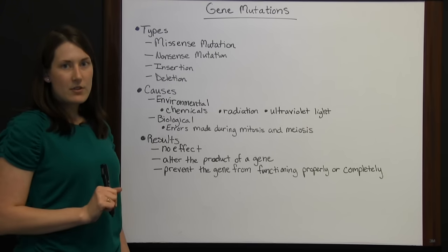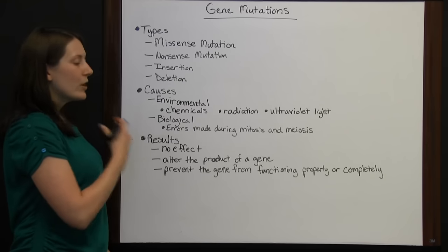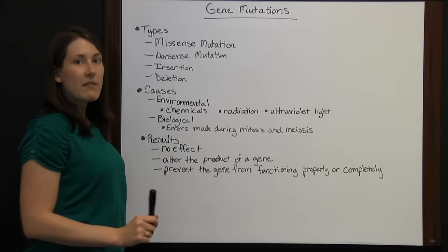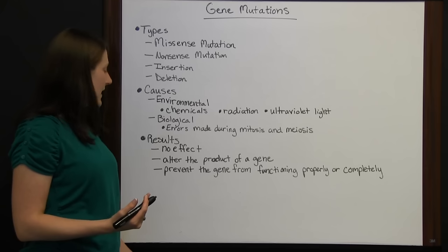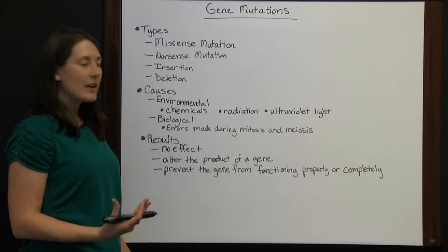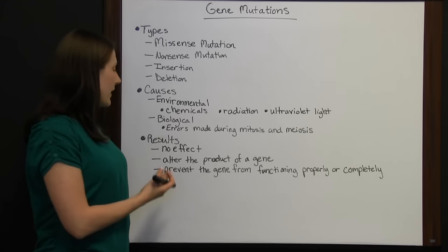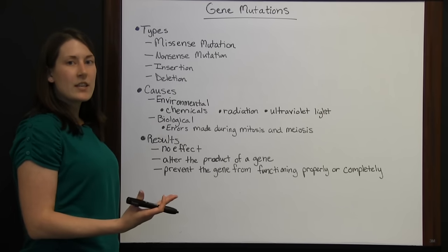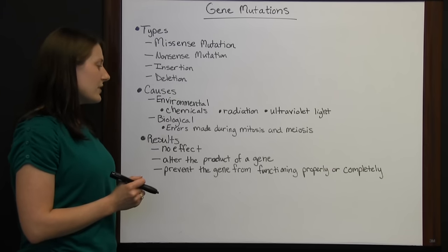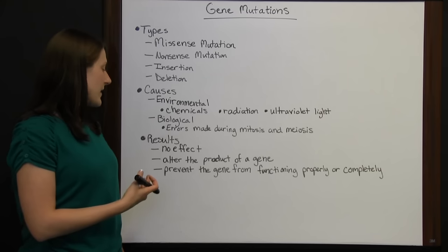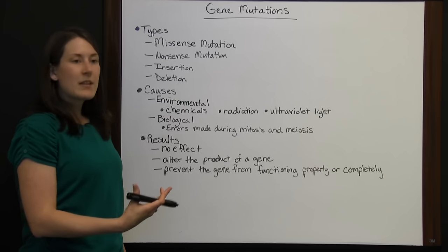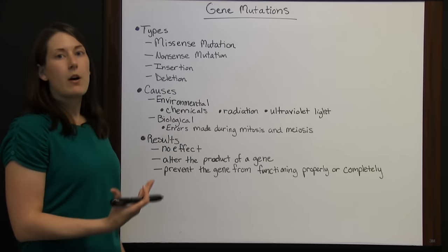The results of mutations: the original course of the DNA sequence is altered. There could be no effect at all if that DNA chain ends and that function isn't carried out — maybe it wasn't something very important. It could alter the product of a gene, where the gene's product comes out differently than it was supposed to, or it could prevent the gene from functioning properly or completely. Maybe the gene's product doesn't get produced at all, or it produces something it's not supposed to.